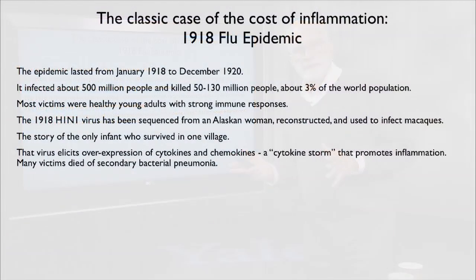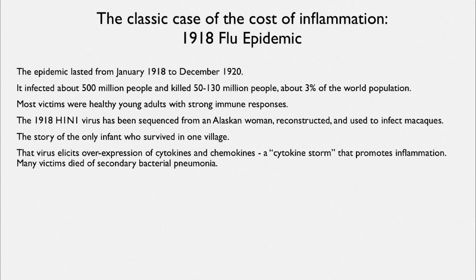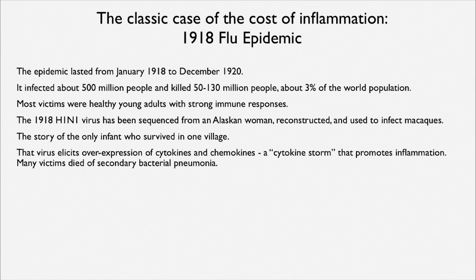What was going on is that the flu virus was eliciting a maladaptive over-expression of cytokines and chemokines—a so-called cytokine storm. It was promoting a massive inflammatory response in the lungs that flooded the lungs with fluid, creating a beautiful environment for bacteria to multiply in. Most of the victims of that epidemic died of secondary bacterial pneumonia.